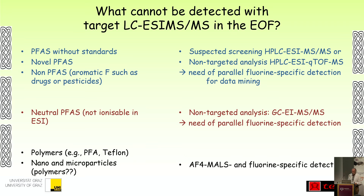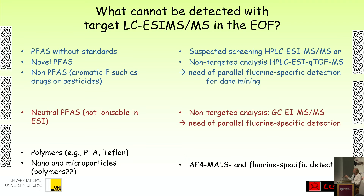We don't see novel PFAS; we don't see non-PFAS fluorinated compounds which are aromatic — for example, pesticides and drugs — which are also extractable. What you can do is suspected screening, and you can do non-targeted analysis using accurate mass like an Orbitrap or QTOF. However, you generate a lot of data and you have to fish out what the fluorinated compound is. You need a fluorine-specific detector. Another problem is neutral PFAS — they are not ionized in electrospray. You need a more powerful and more sensitive source.